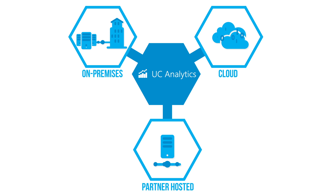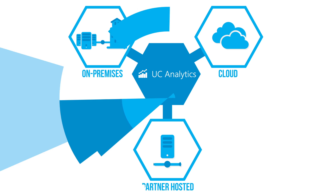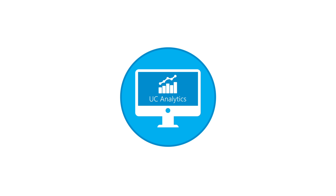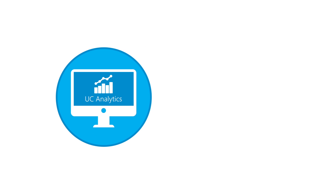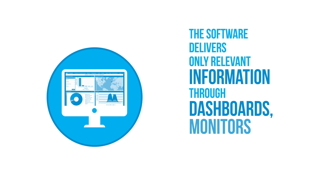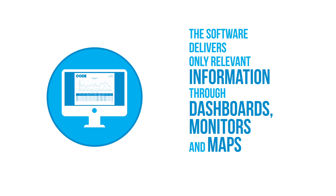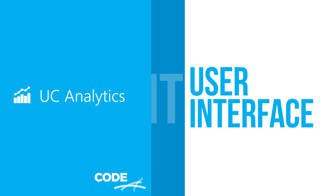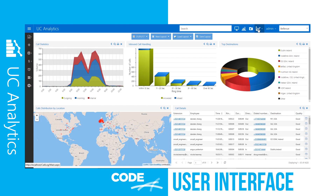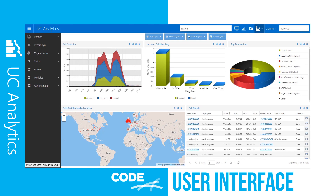All three are delivered via a single user interface sharing the same backend database. UC Analytics is a user-driven, user-friendly solution deployed across an organization and used by technical and business staff alike. It delivers only relevant information through its customizable dashboards, reports, monitors and maps. The user interface has a familiar look and feel, allowing quick navigation to the key areas of the software using either the shortcut keys or the pop-out icons. UC Analytics Plus and UC Recorder are also accessed through the single interface.